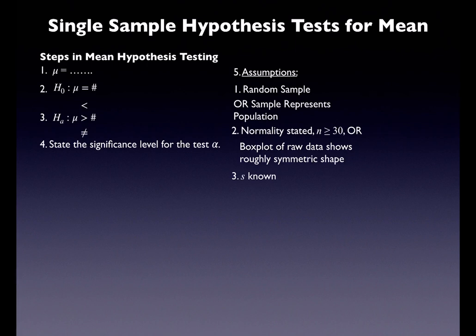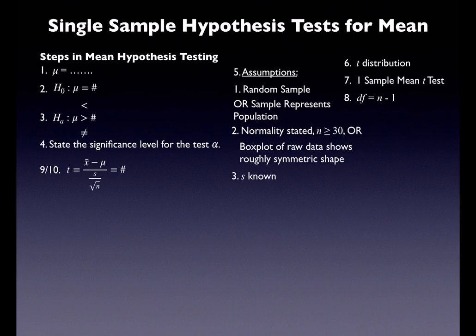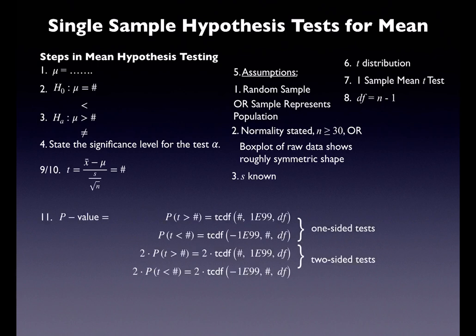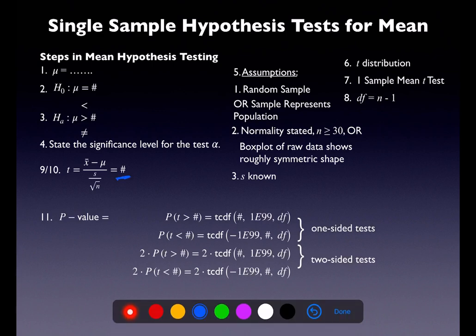For this class, we're always going to use the t-distribution in mean land. Some folks use the z-distribution if the sample size is 30 or higher, but I don't subscribe to that. It's a one sample mean t-test, and your degrees of freedom formula is n minus one. There's your test statistic formula — crunch that number, then use it to calculate your p-value in step 11. A p-value is a probability, which is also why you sketch a picture — every probability has a graph that matches it. Then state your conclusion.